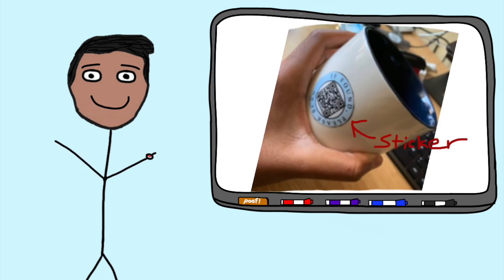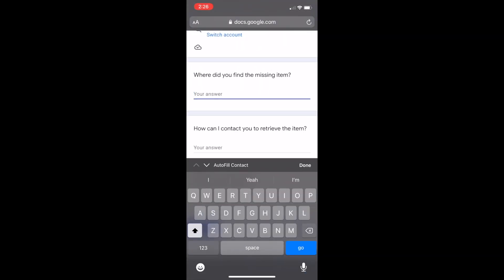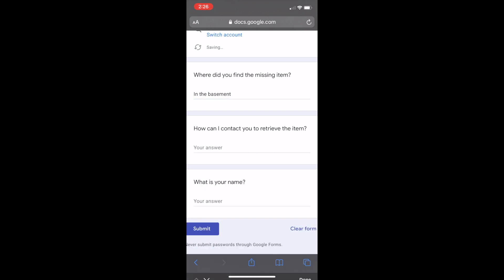It's a sticker. If you scan it, it'll lead to a Google form where you can submit relevant information pertaining to the lost item, like your name, where you found it, and your preferred method of contact.